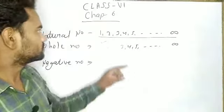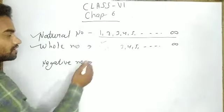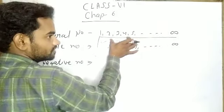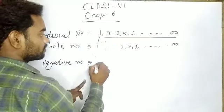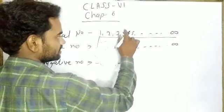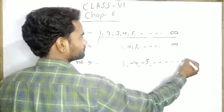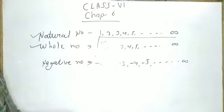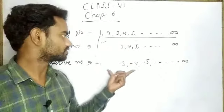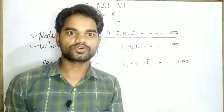Now let's discuss negative numbers. These are the natural numbers. If we take the corresponding opposite numbers of these natural numbers: the opposite of 1 is minus 1, opposite of 2 is minus 2, opposite of 3 is minus 3, opposite of 4 is minus 4, opposite of 5 is minus 5, and so on. If we write the corresponding opposite numbers of the natural numbers, we get this series, which is known as negative numbers.